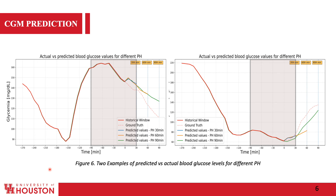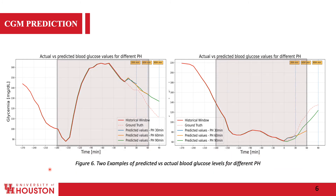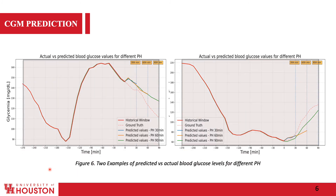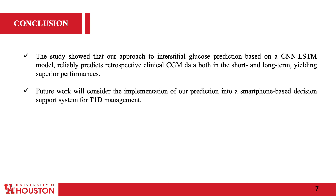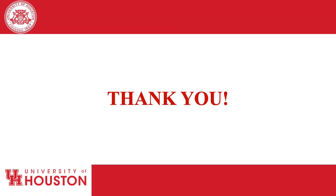The model uses previous samples with length equal to 3 times the prediction horizon. For example, for a 30-minute prediction horizon the model takes the previous 90 minutes of data; for 60 minutes it takes the previous 180 minutes; and for 90 minutes it takes the previous 270 minutes. Our model reliably predicts retrospective clinical CGM in both short and long term with superior performance. Future work will consider implementing this prediction into a smartphone-based decision support system for Type 1 diabetes management.